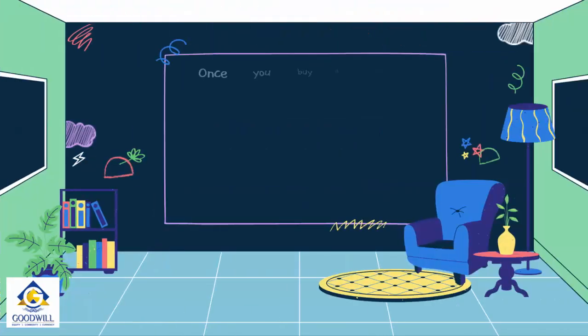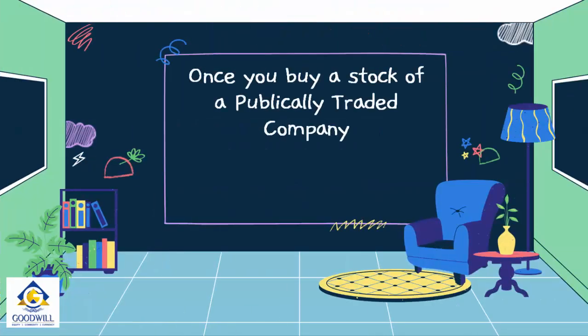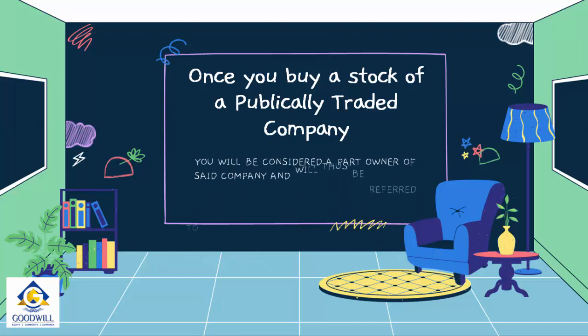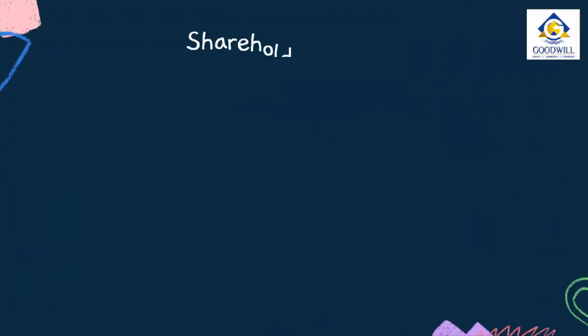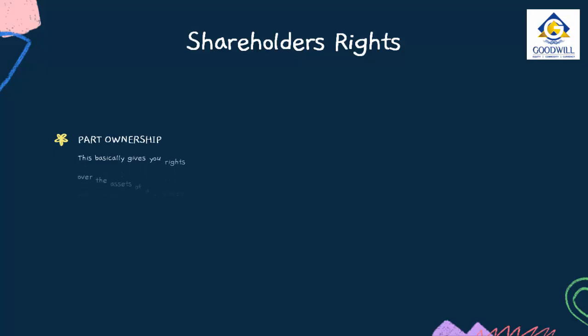Once you buy the stock of a publicly traded company, you will be considered a shareholder or a part owner of that company. Being a shareholder brings you certain rights called shareholder rights. The first right you are entitled to is part ownership of the company, which gives you rights over the assets of a profitable company of which you hold the shares.